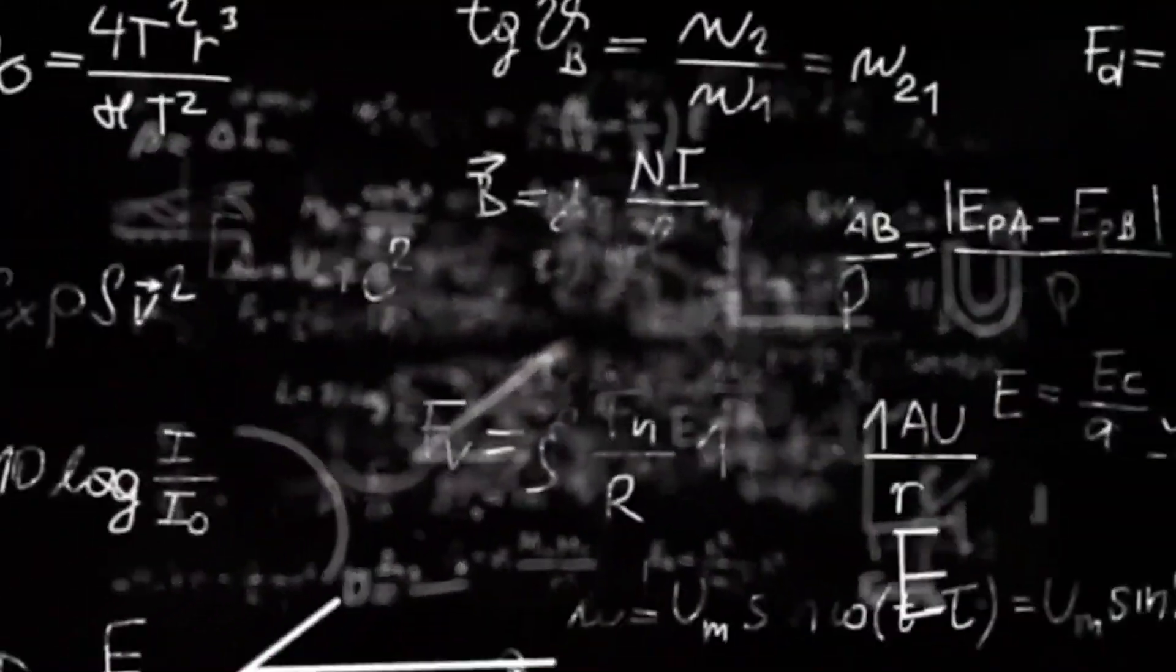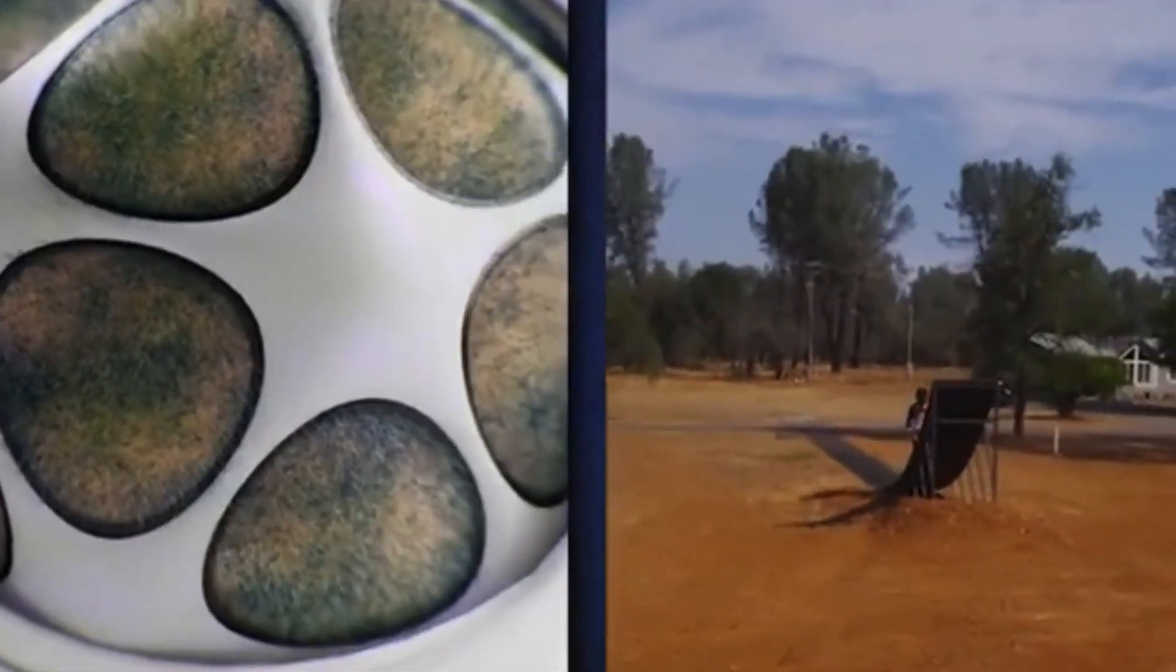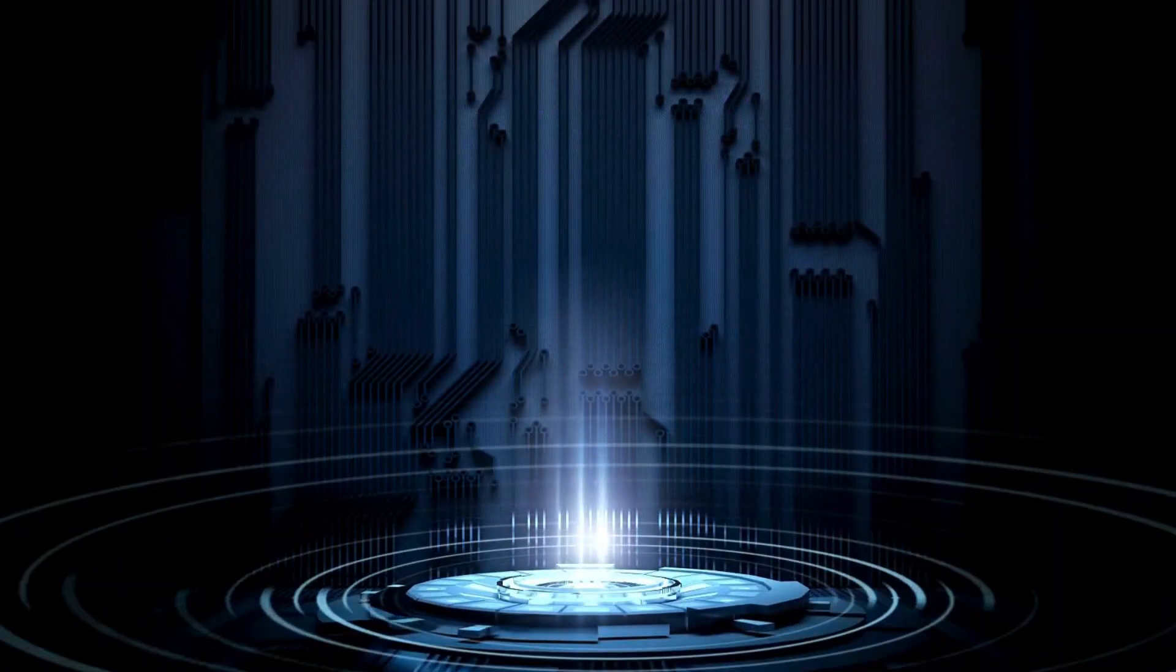Imagine a falling apple or the ticking of a clock. These are events that follow a predictable, linear course, where cause precedes effect. Newton's laws of motion gave us precise equations to predict what would happen next, making the universe seem like a giant clockwork machine.